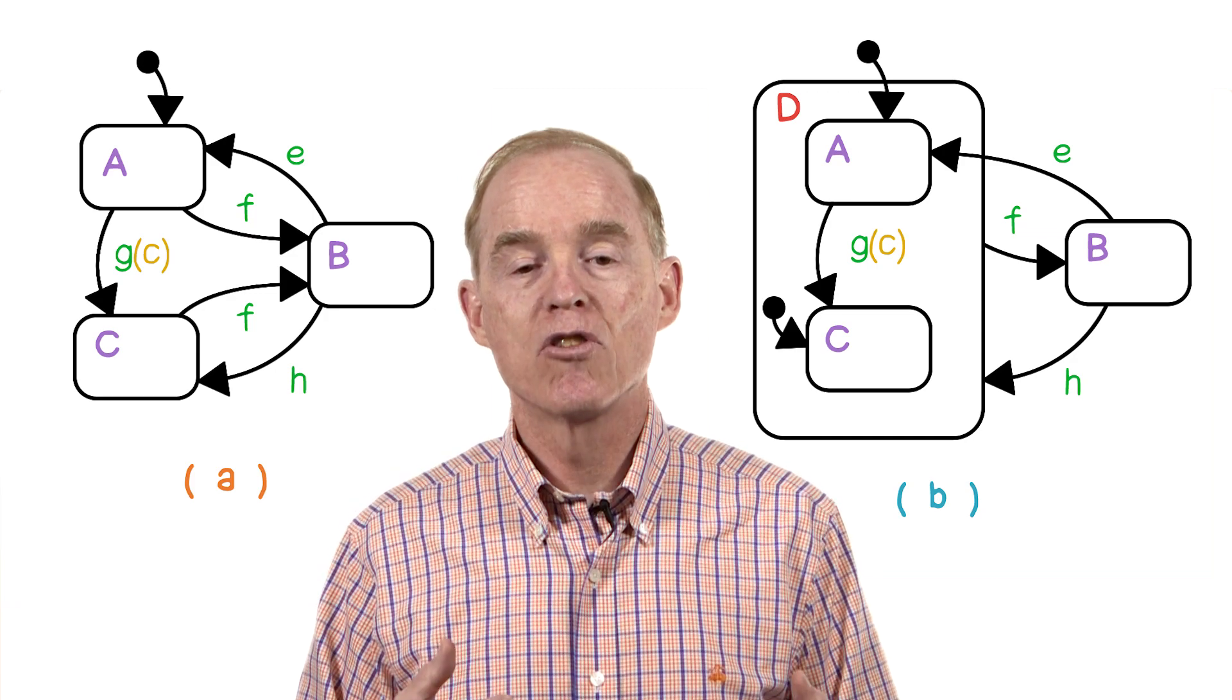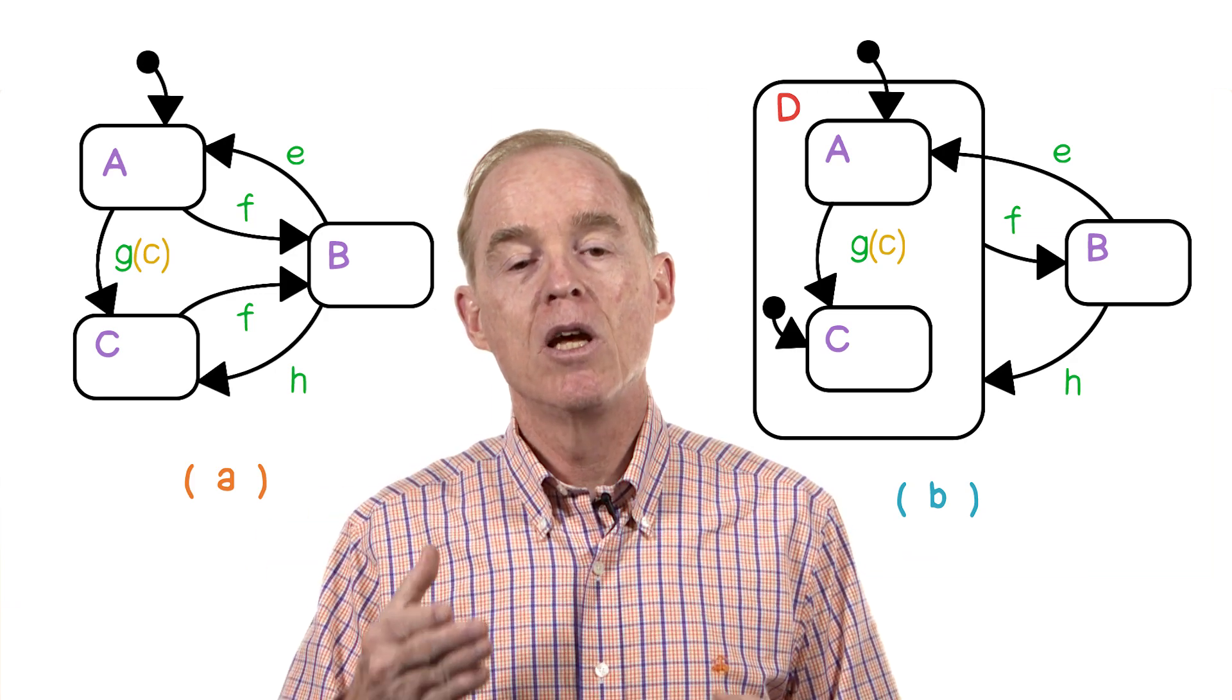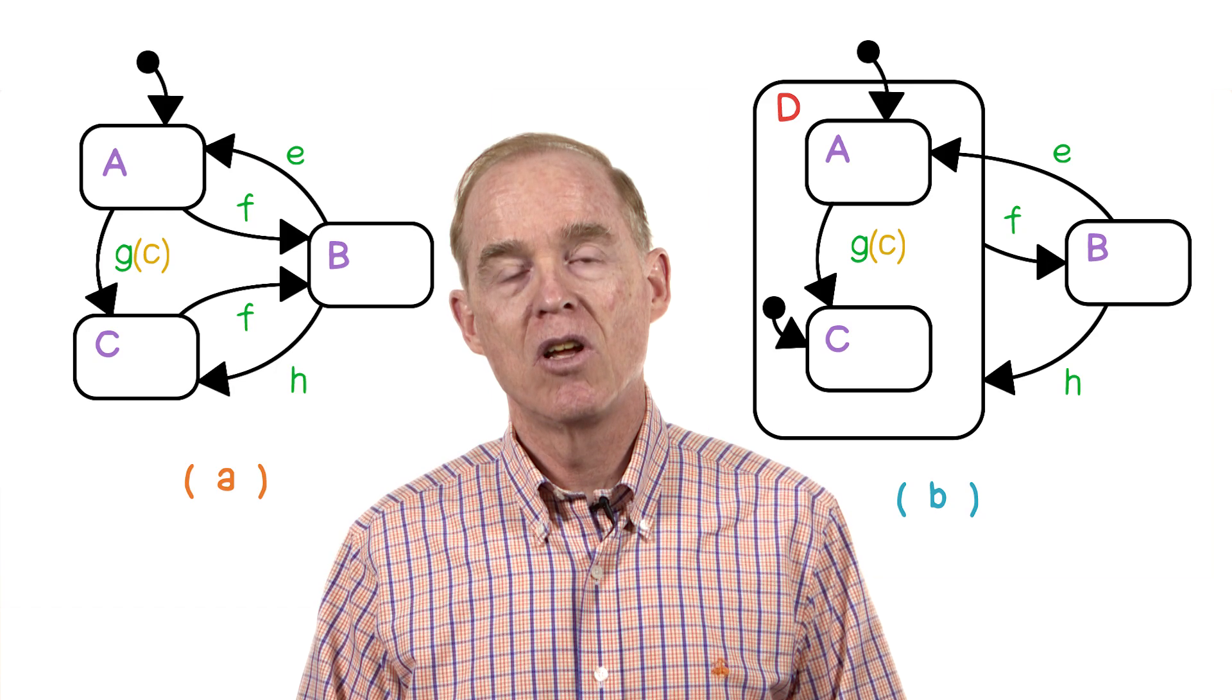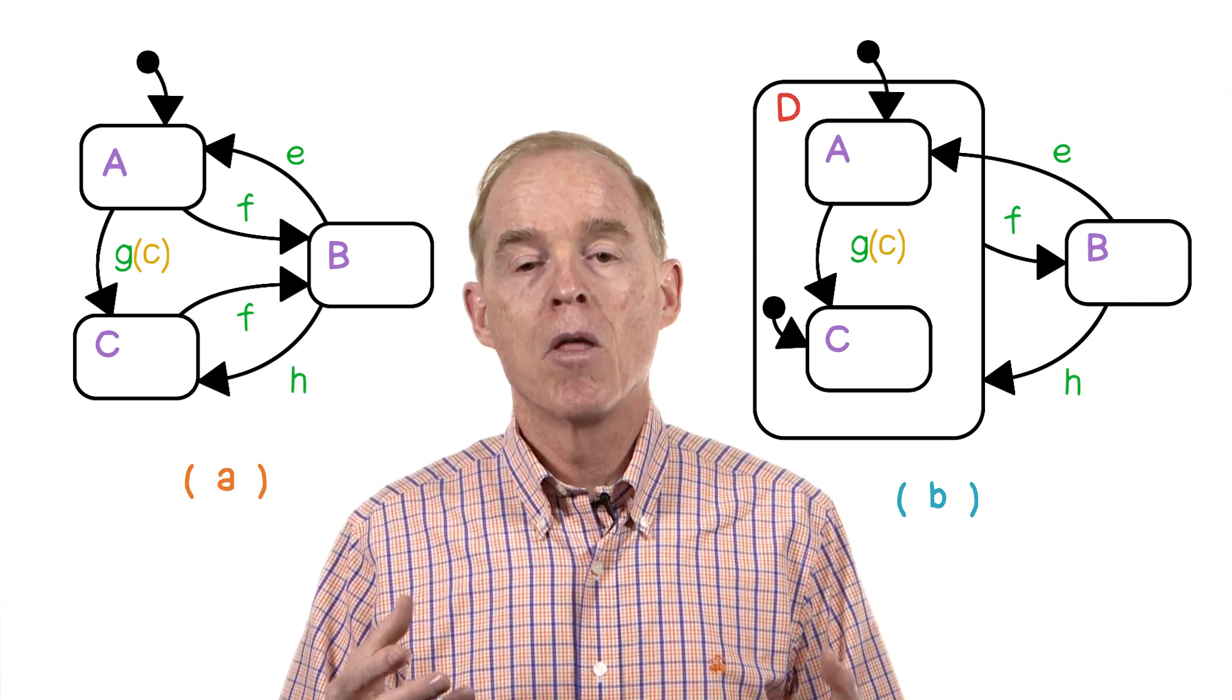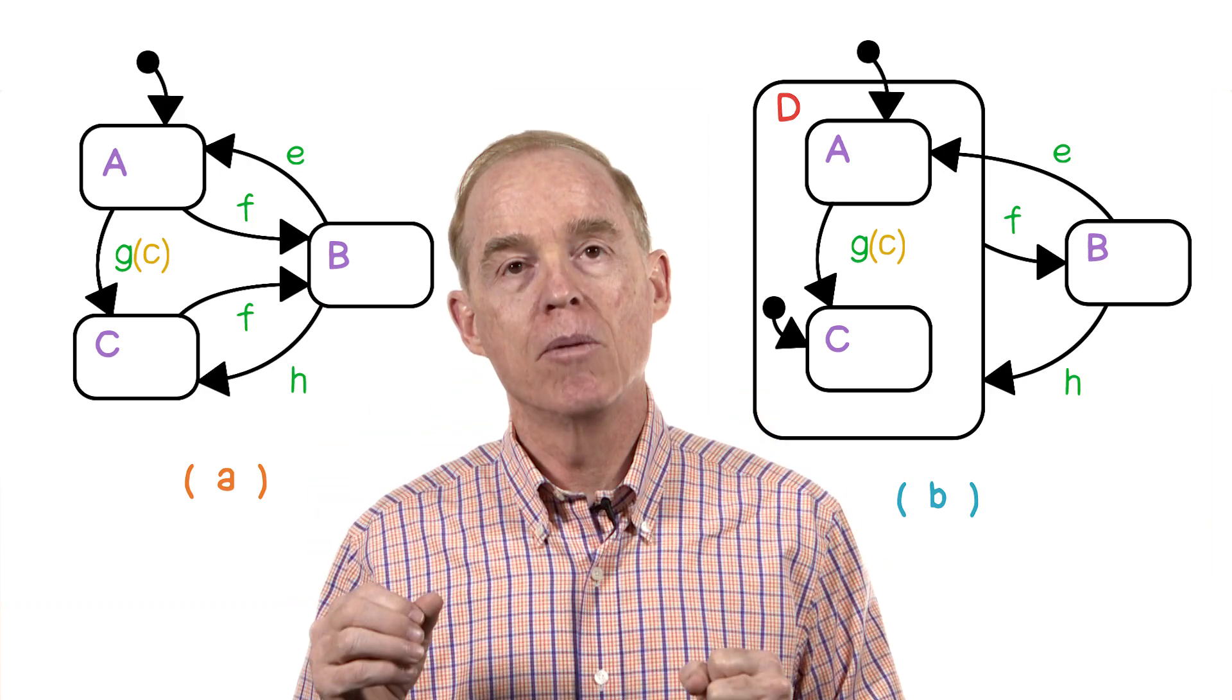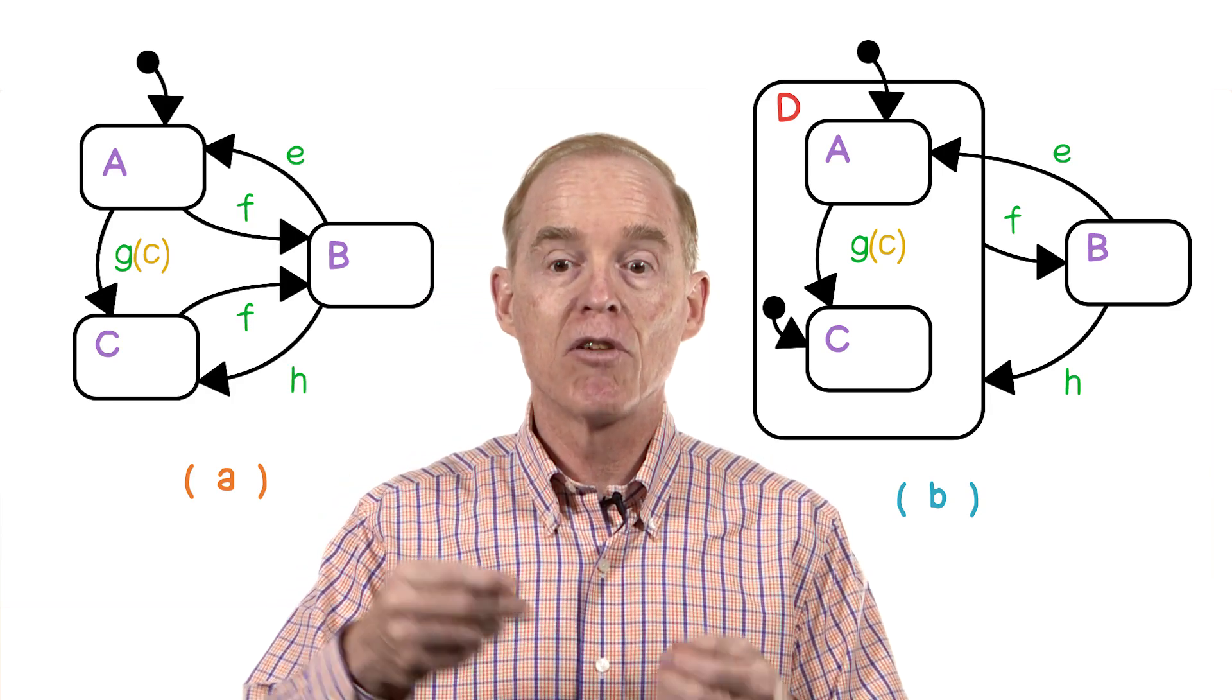Going back to the one on the left, notice there are two transitions labeled F: one coming out from A and going to B, one coming out of C and going to B. On the right, they're coming out of D. That is, there's an abstraction saying when you leave any state in D under transition F, you go to B. So in that case, we've reduced two transitions labeled F to one.